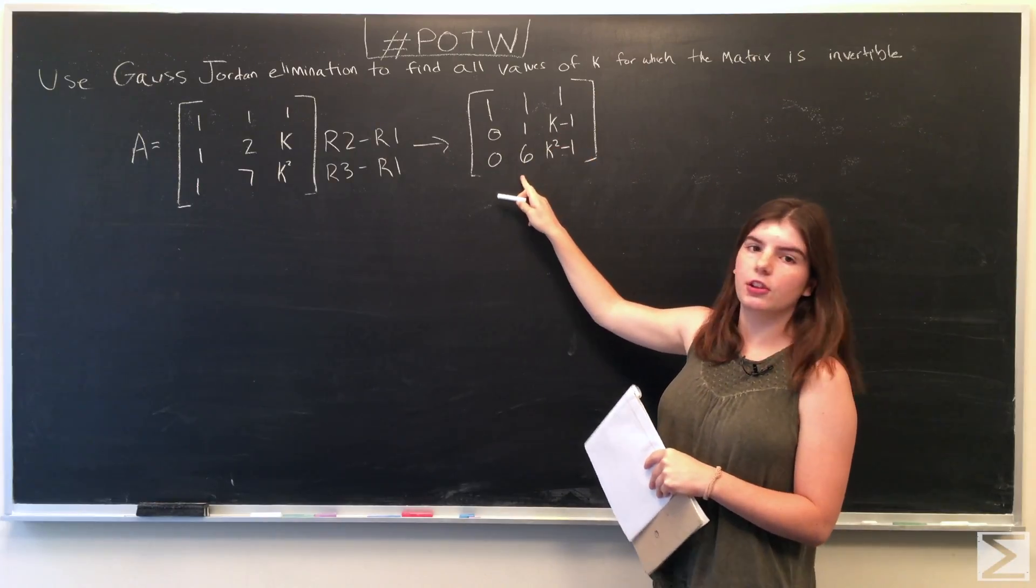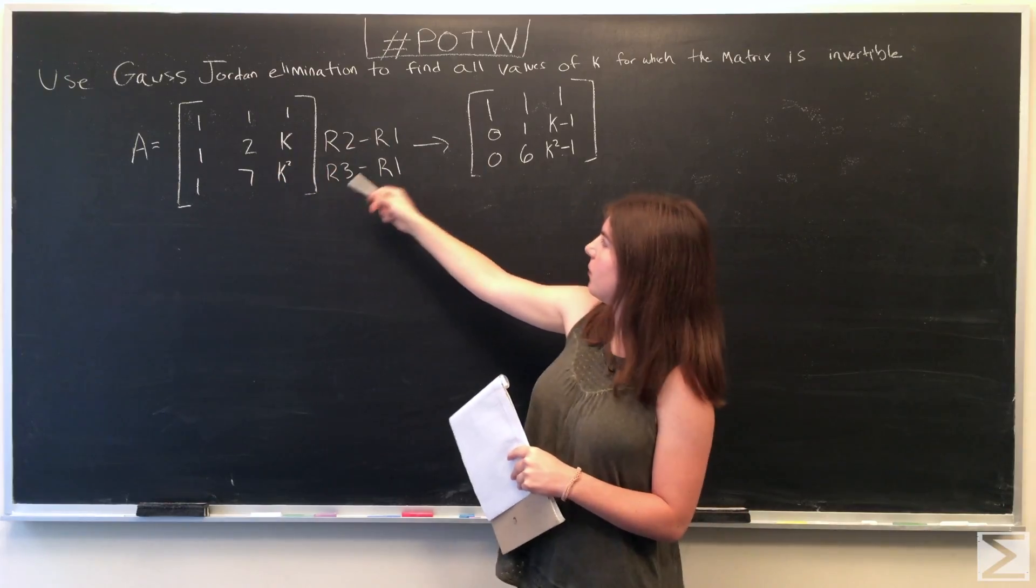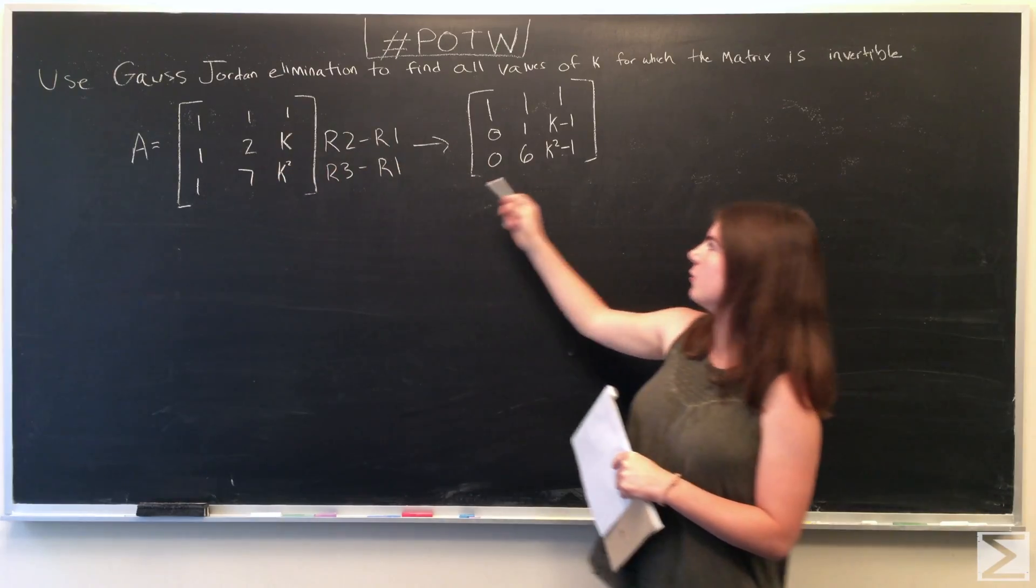And then we did the same thing to the third row. We subtracted the first row from the third row. 1 minus 1 is 0, 7 minus 1 is 6, and then we have k squared minus 1.